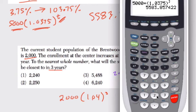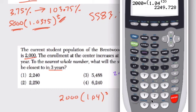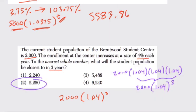So here, let's find what this is. We do 2,000 times 1.04 to the third power, 2,249, round up to 2,250, the nearest whole number.